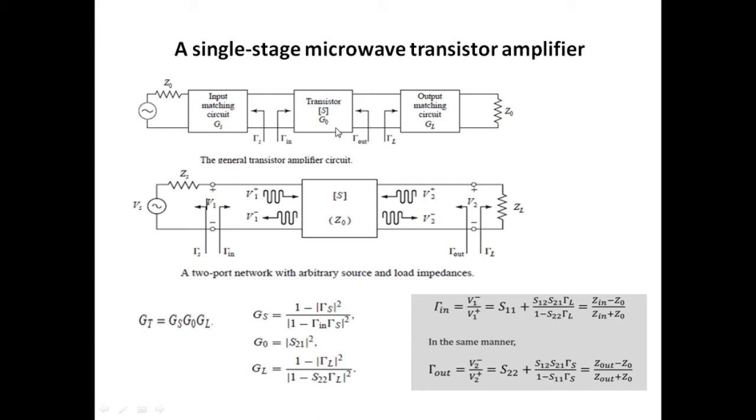Once you choose that loading condition as well as the transistor type, the design part for getting the gain G0 is over and you will get the gain mode of S21 squared when you properly choose the load Zs and Zl based on complex conjugate matching approach. By using input matching circuit and output matching circuit you will get this additional gain Gs and Gl.